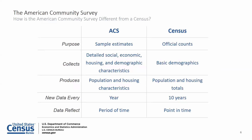The ACS collects information that previously appeared on the Census long form, collecting detailed social, economic, housing and demographic characteristics. Whereas the Census collects basic demographics via the short form such as age, sex, race, Hispanic origin, household relationships and housing tenure.